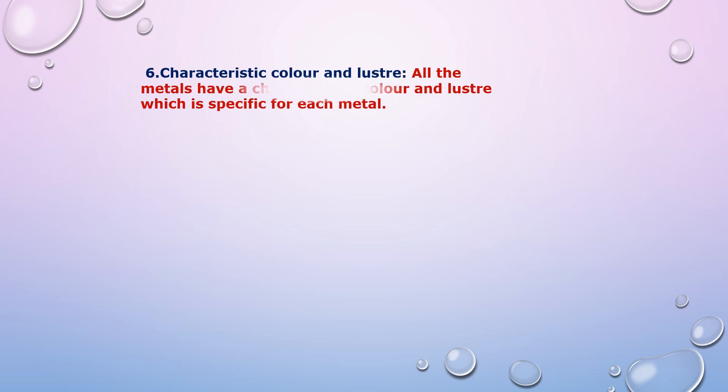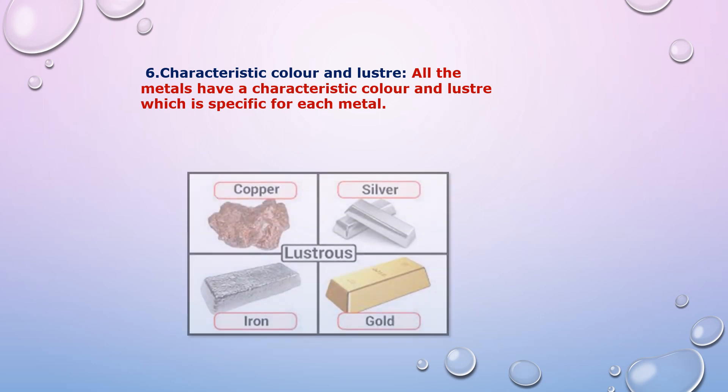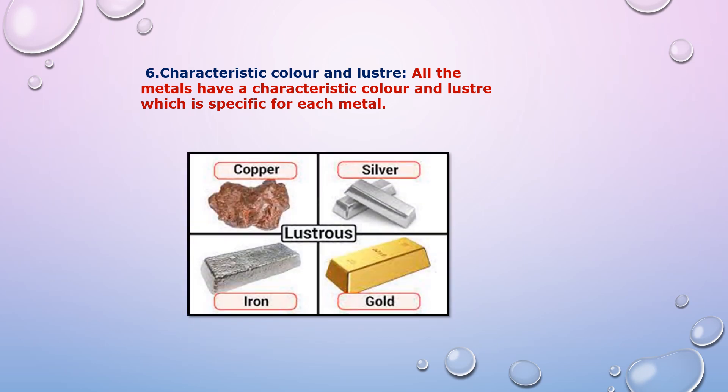The sixth property of metal is characteristic color and luster. All metals have a characteristic color and luster which is specific to each metal.